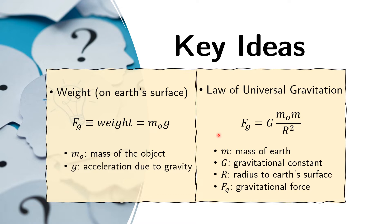The generalization of the attractive force between two objects due to their masses is given by this equation. The force is proportional to their masses and inversely proportional to the square of the distance between them. The constant of proportionality is called the gravitational constant G. In this problem, the masses are the mass of the Earth and the mass of the object on the surface of the Earth, and the distance is from the center of the Earth to its surface.